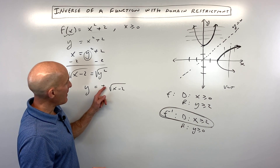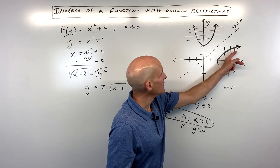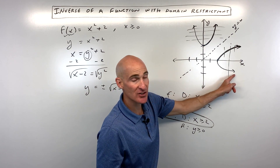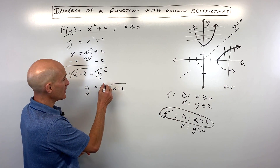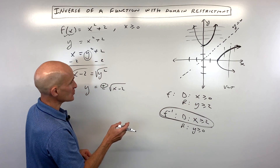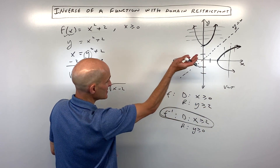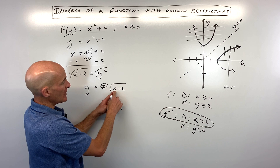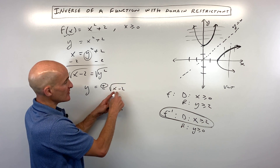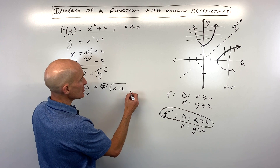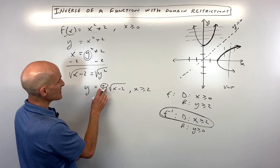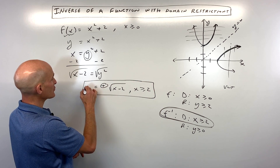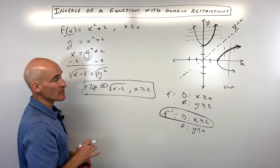When you take the square root of both sides, you get two answers: y equals plus or minus the square root of x minus 2. The positive square root of x minus 2 is this graph right here, and the negative times the square root of x minus 2 reflects it — that's the other branch. We're only interested in the positive one because of the domain restrictions — we want the range to be y is greater than or equal to 0, and the domain to be x is greater than or equal to 2. So we write x is greater than or equal to 2, take the positive root, and this is your inverse function: f inverse of x equals the square root of x minus 2.